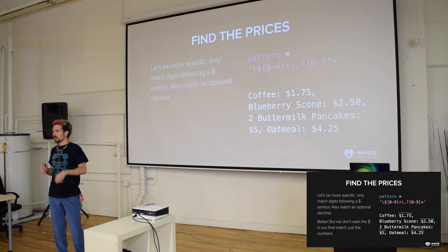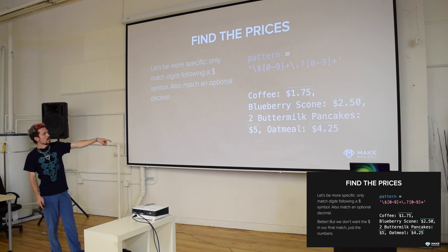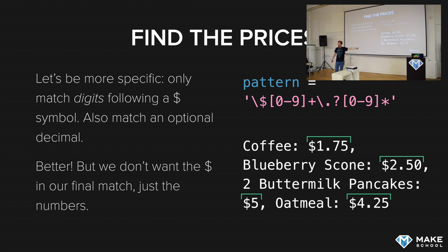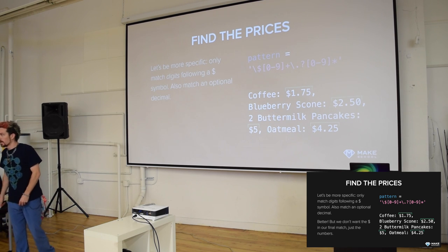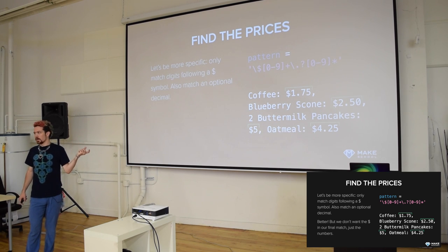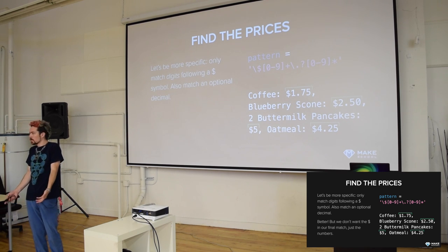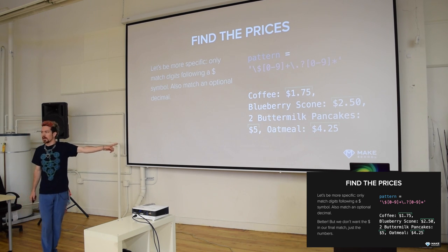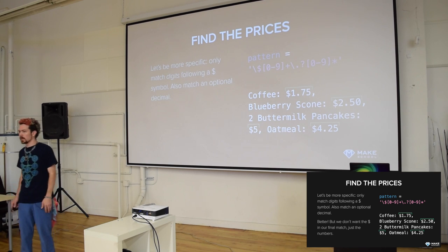Running the pattern over our menu text, it matches all four prices. It gets the $5 but not the comma, and gets the 4.25 without capturing the period after it. But is this what we wanted? Maybe we don't want the dollar sign - we just want the number, like 5 or 4.25, so we can process it as a number in our application. How do we get the pattern to match but exclude the dollar sign from what we capture?